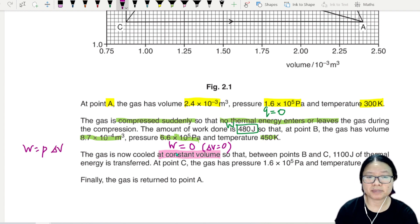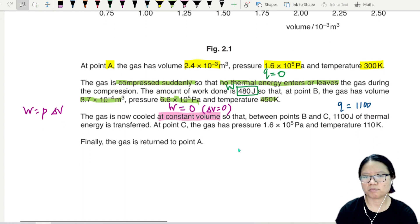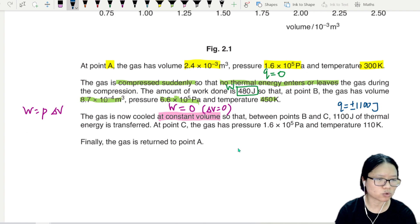Between the points B and C, 1100 joules of thermal energy is transferred. This q is 1100 joules, but positive or negative, not sure yet, need to decide. So I'm going to put plus minus 1100, don't know.